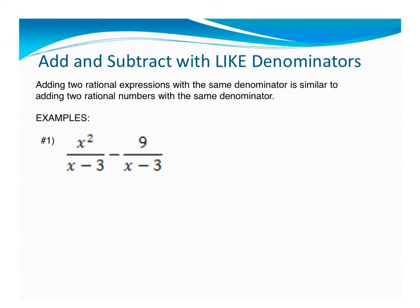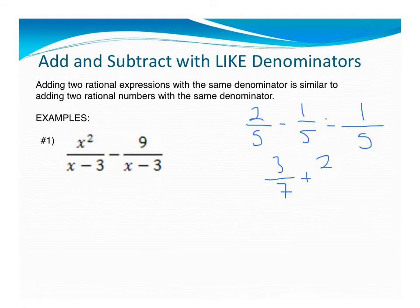So when we have like denominators, adding and subtracting rational expressions is actually pretty easy. It's kind of the same thing as if you were to have 2 over 5 minus 1 over 5. I'm going to just subtract my numerators because my denominators are going to be the same. So I'm going to have something over 5. Well, 2 minus 1 is just 1. That easy. If I had 3 over 7 plus 2 over 7, I'm going to get 5 over 7. Like denominators, super easy.